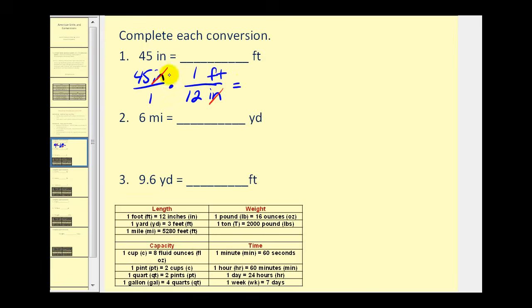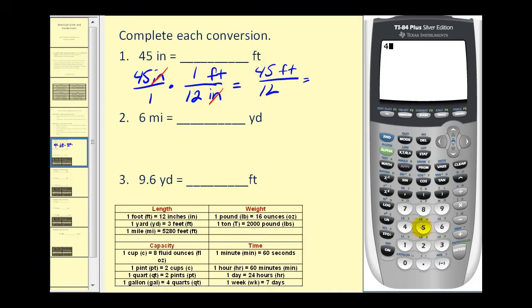Now we multiply the numerators together: forty-five times one foot gives us forty-five feet. Our denominator is one times twelve, or twelve. Remember a fraction bar is just a division symbol, so we take forty-five and divide by twelve. Forty-five divided by twelve gives us three point seven five feet.